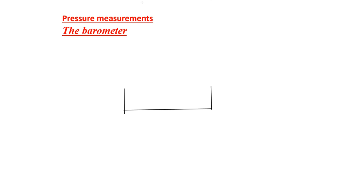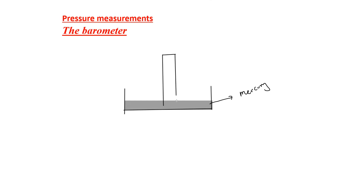The barometer consists of a large tray or container filled with mercury, and there is a test tube which is inverted on this large tray. In the surrounding, air particles are moving randomly. As these air particles hit the mercury surface, they push the mercury so that mercury rises in the tube.